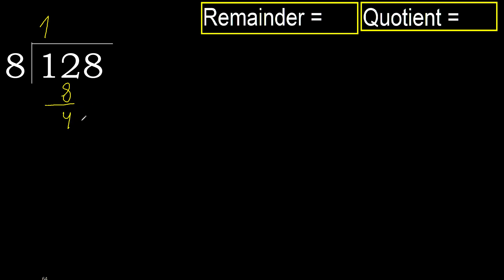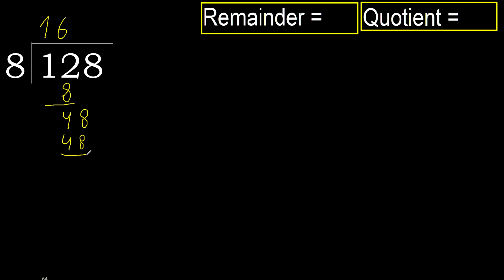Next: 48. 8 multiplied by 6 is 48; 48 is not greater. 48 minus 48 equals 0. Next.